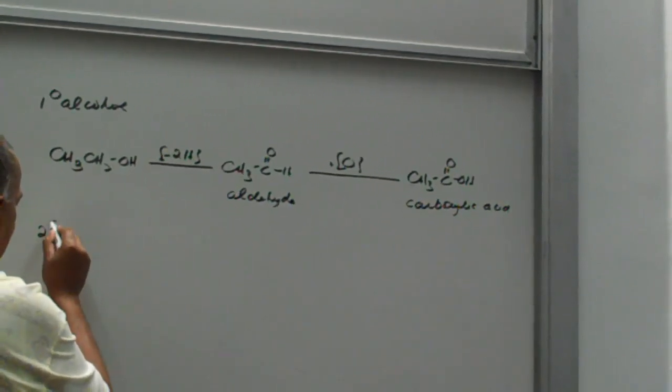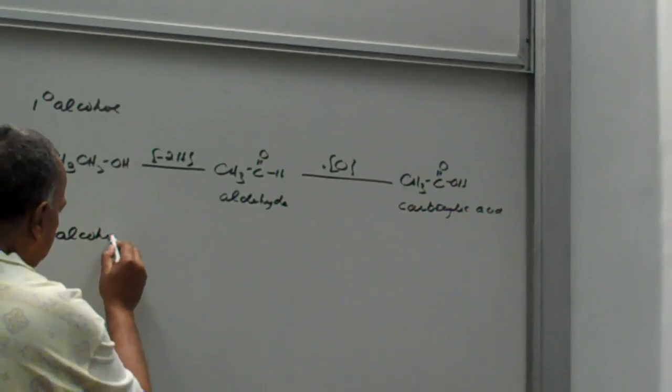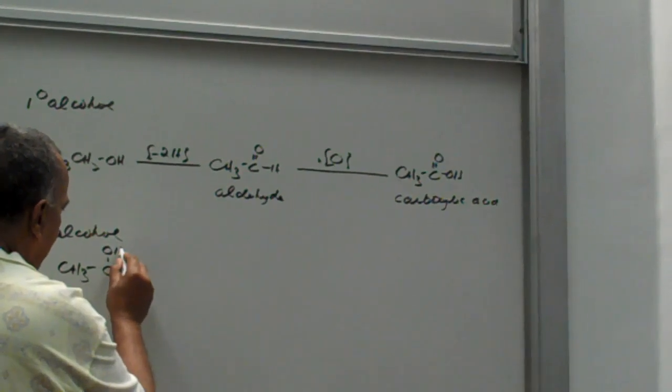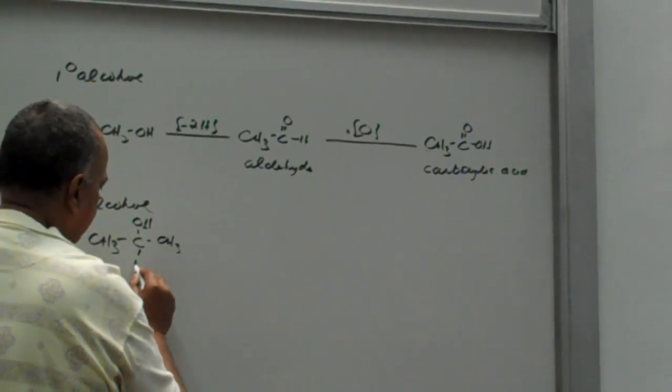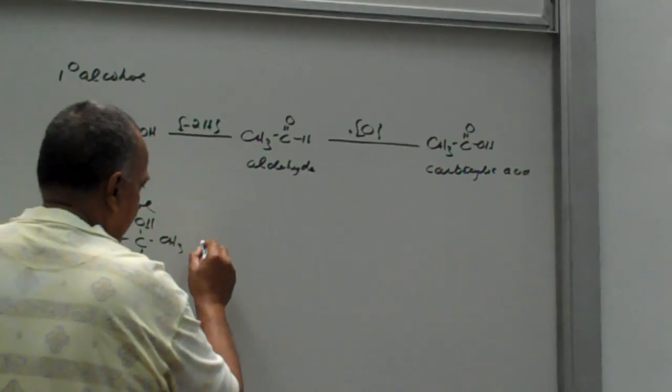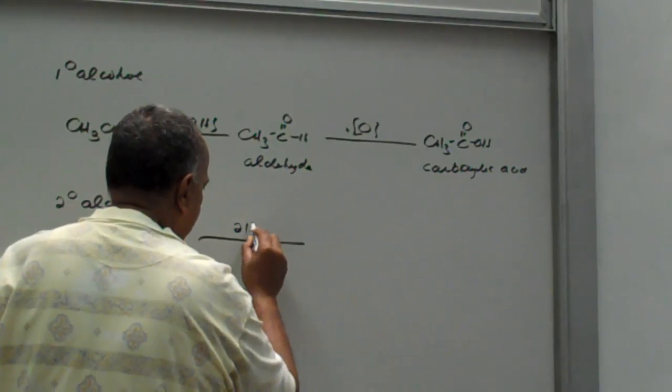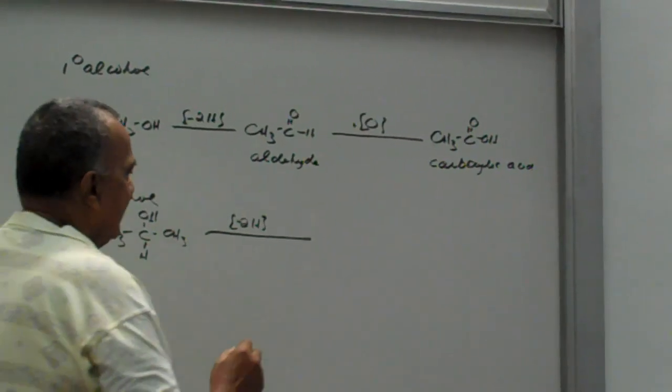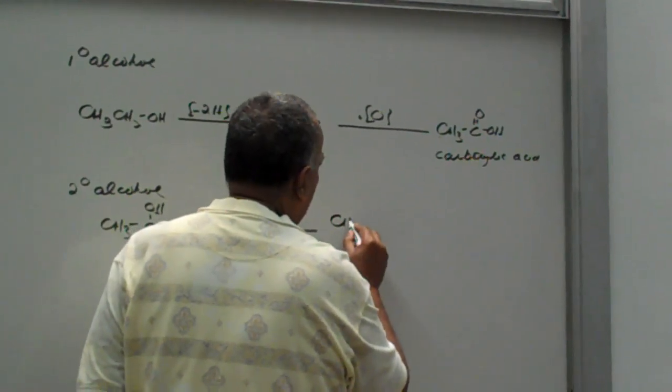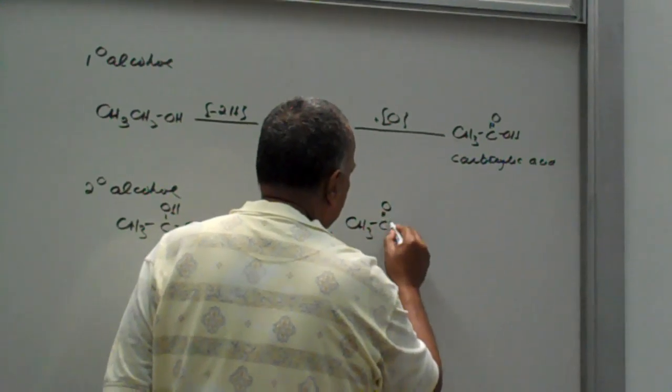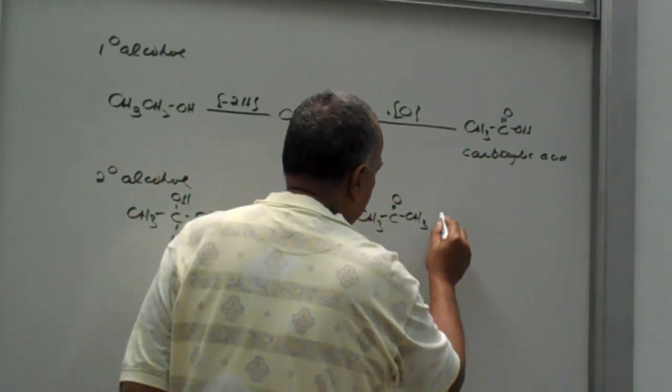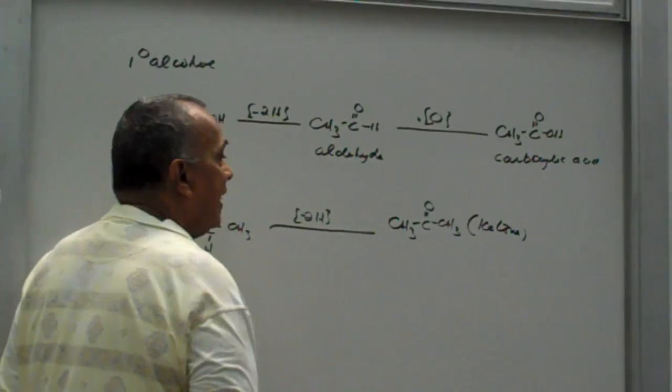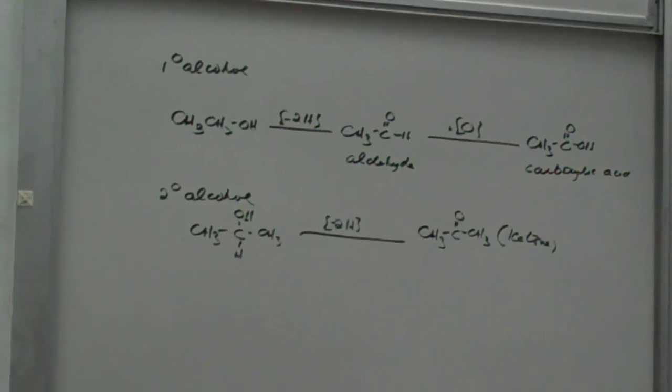What if I have a secondary alcohol? Let's use the simplest one, 2-propanol. If I oxidize 2-propanol, I lose two hydrogens and finish up with a compound called a ketone. The reaction stops there; it doesn't go any further.